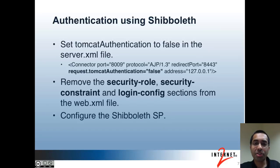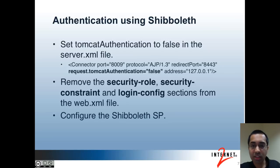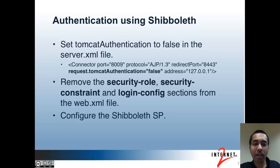If you want to set up authentication using Shibboleth, that's also fairly easy. There are only a few steps. First, you would modify the Tomcat authentication setting to false in the server.xml file for your connector — you would also do this if using basic authentication. Also, in the web.xml file for the Grouper UI, you would remove the security role, security constraint, and login config sections. Finally, you would configure your Shibboleth SP to protect the path used by the Grouper UI, which by default is /grouper.